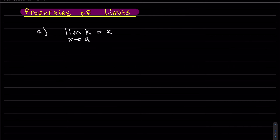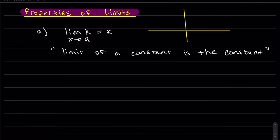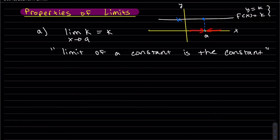The first property is: the limit of a constant is equal to that constant as x goes to a. Looking at the graph of this, at x equals a, this is my constant. My y is equal to k. So we can see as x approaches a, the limit is k.